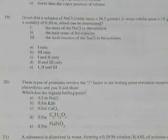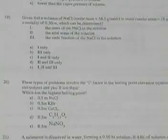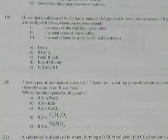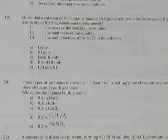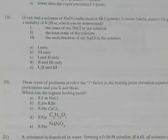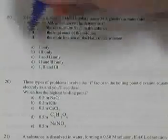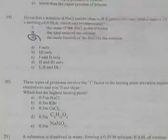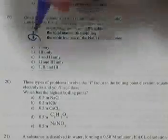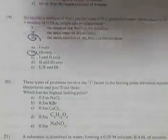Number 19: only number 3 can be determined from the given information, so the answer is letter B, number 3. Number 20 involves the van't Hoff factor i in the boiling point elevation equation. Know your electrolytes — which has the highest boiling point?